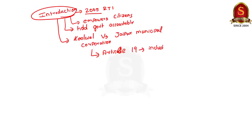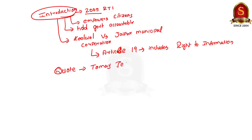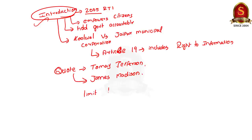The Right to Information Act 2005 gave a legal framework for the right to information. In the introduction, you can also write some quotes that link democracy and information. You can write about the famous quote of Thomas Jefferson: 'Information is the currency of democracy.' You can also quote James Madison, who said: 'A popular government without popular information or means of acquiring it is but a prologue to farce or tragedy or perhaps both.' Limit the introduction to two or three lines maximum.